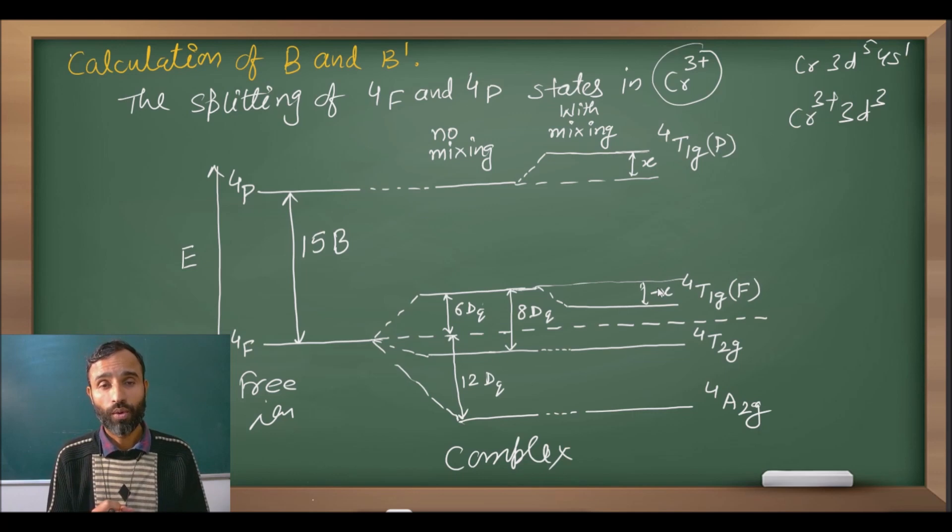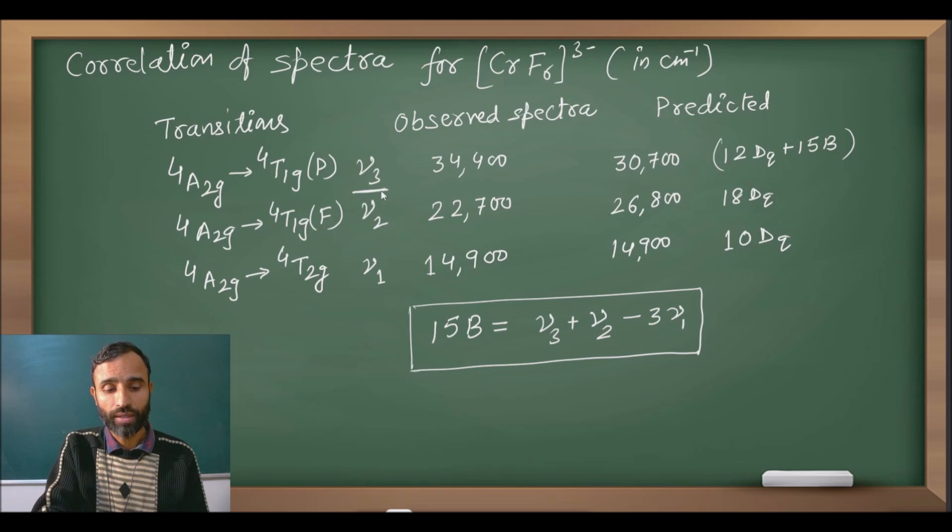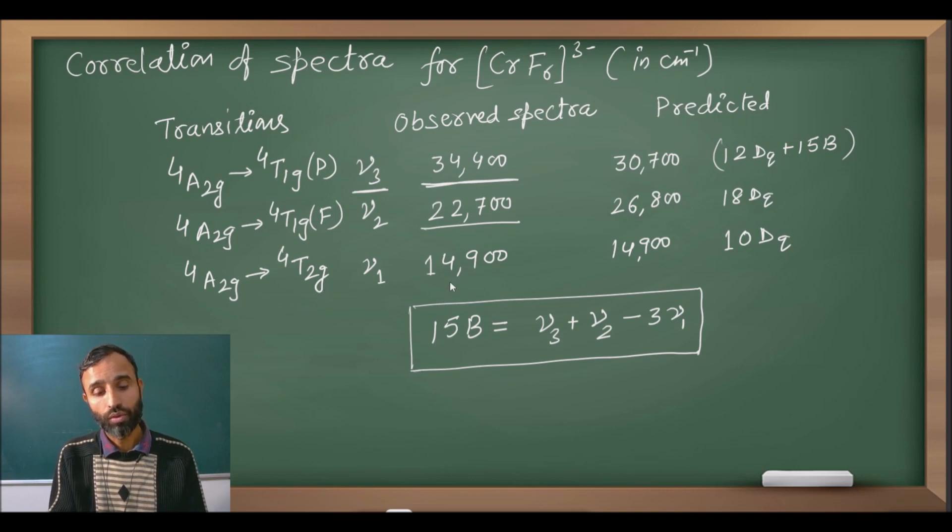Now let us calculate frequency of transition. 4A2g to 4T2g, one transition. 4A2g to 4T1g, second transition, and 4A2g to 4T1g, third transition. In 4A2g to 4T1g, the frequency is maximum, that is nu 3. Observed frequency is 34,400. For A2g to T1g(F), value is 22,700, and A2g to T2g, the value is 14,900.